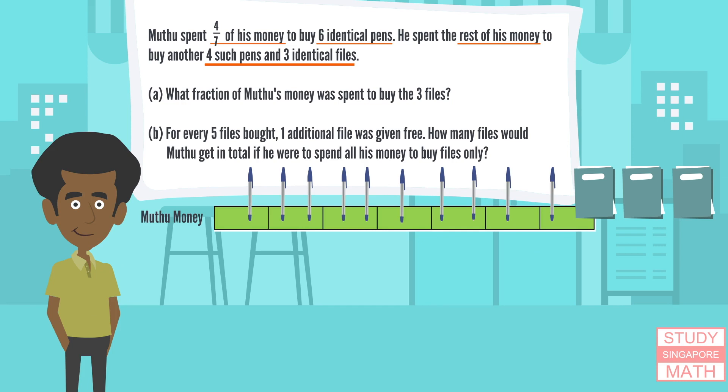Part B: For every five files bought, one additional file was given free. How many files would Muthu get in total if he were to spend all his money to buy files only?